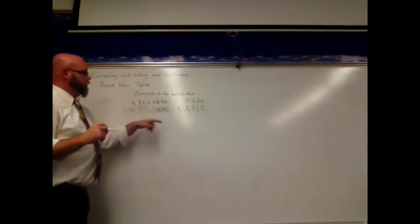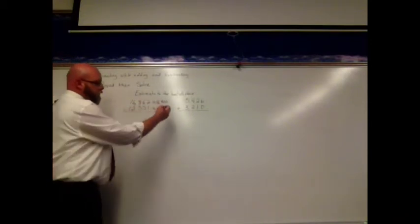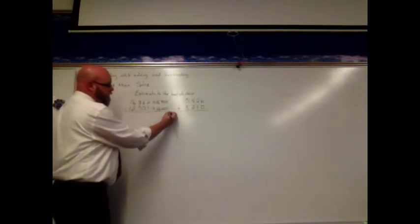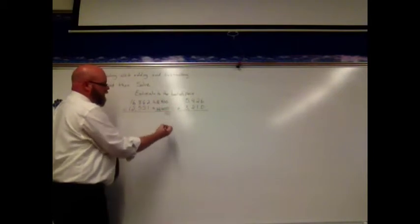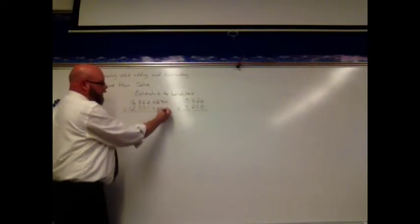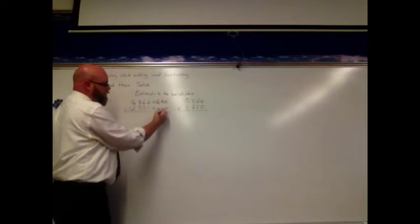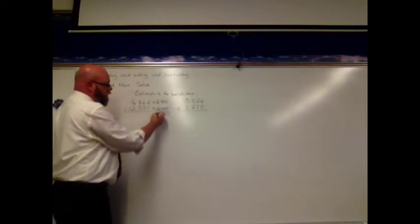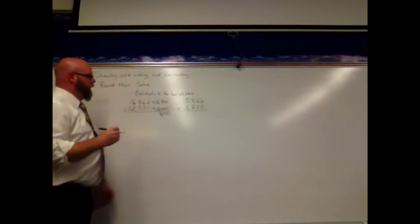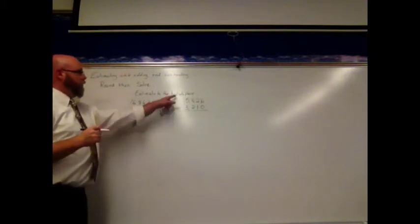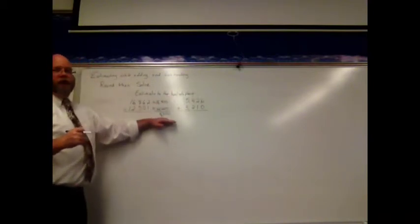So now I'm going to subtract: 0 minus 0 is 0, 0 minus 0 is 0 again, 9 minus 6 is 3, 6 minus 2 is 4, and 1 minus 1 is 0. So my estimated answer to the hundreds place is 4,300.